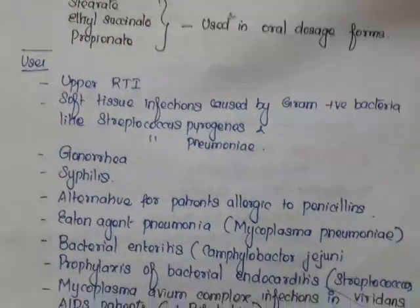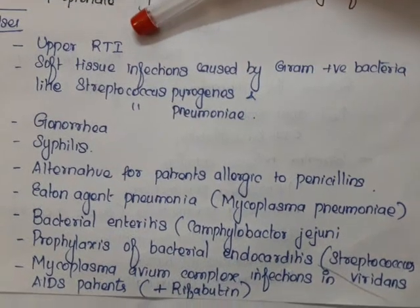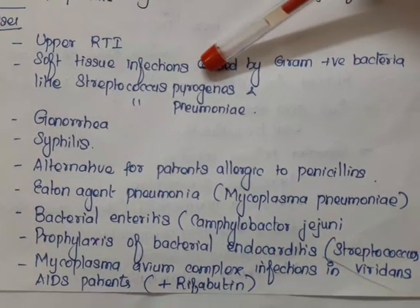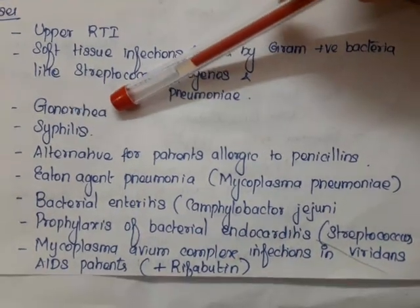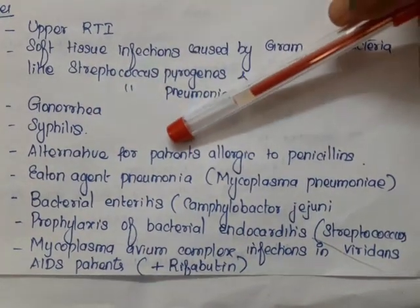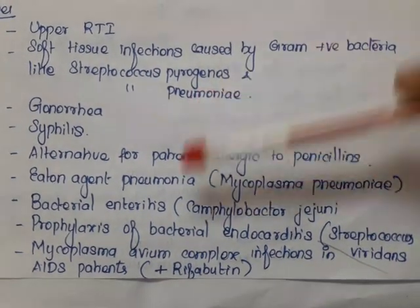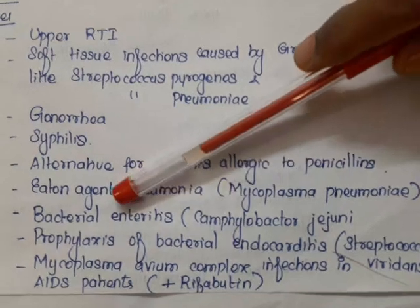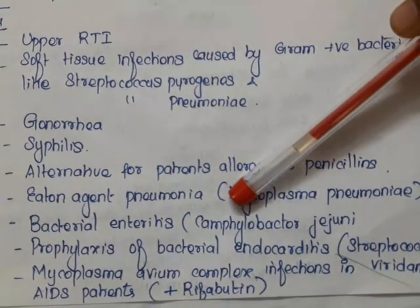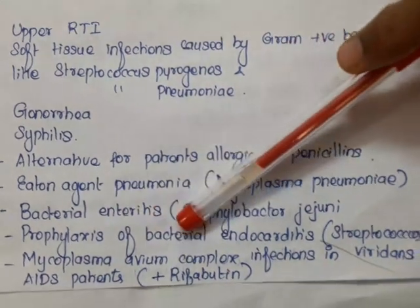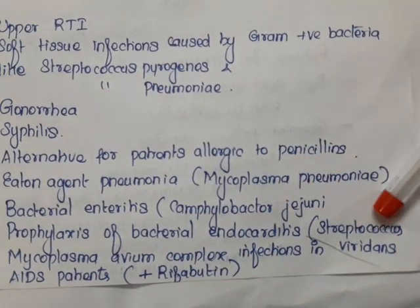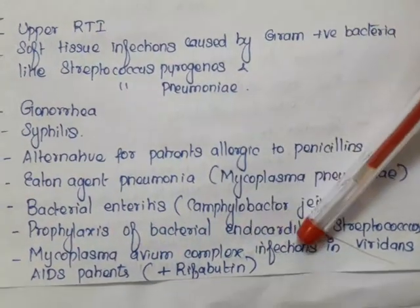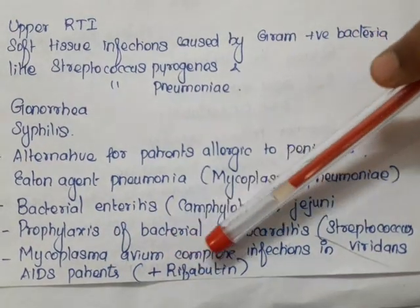Uses of erythromycin: used in the treatment of upper respiratory tract infections and soft tissue infections caused by gram-positive bacteria like Streptococcus pyogenes and Streptococcus pneumoniae; in the treatment of gonorrhea and syphilis as an alternative for patients allergic to penicillins; in atypical pneumonia caused by Mycoplasma pneumoniae; in bacterial enteritis caused by Campylobacter jejuni; in prophylaxis of bacterial endocarditis caused by Streptococcus viridans; and in Mycobacterium avium complex infections in AIDS patients, usually given in combination with rifabutin.